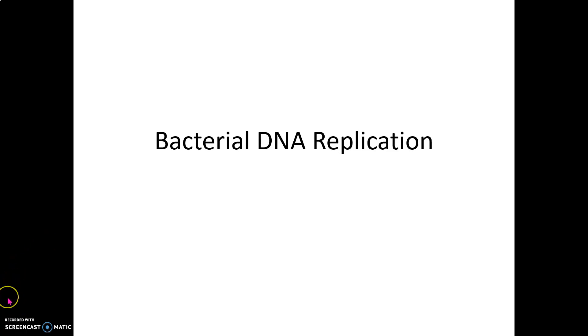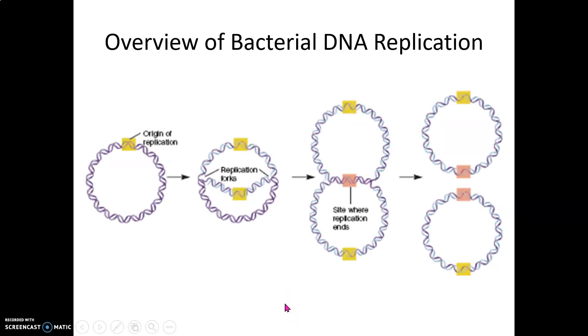Now that you know all the key players, how do they work together to ensure that DNA is properly replicated in bacterial cells? Bacteria have one origin of replication where the replication fork opens up, and it goes bidirectional.